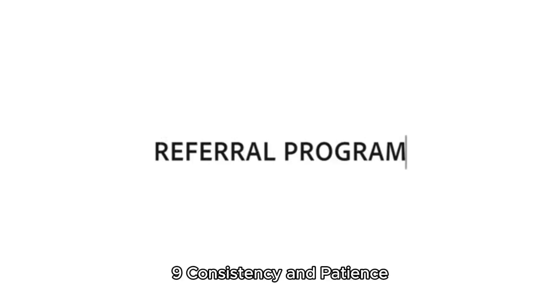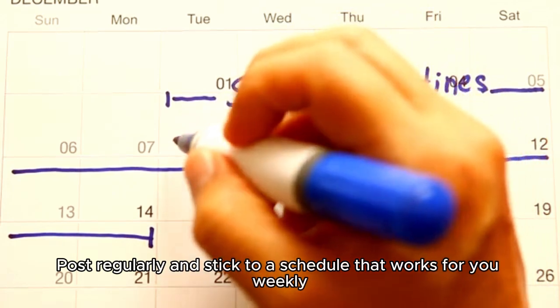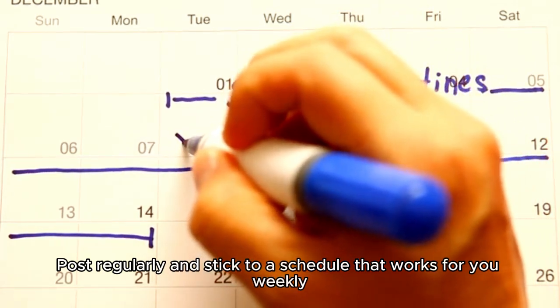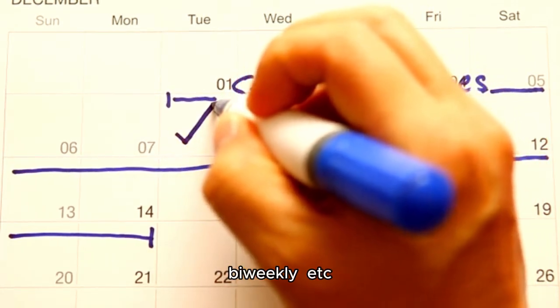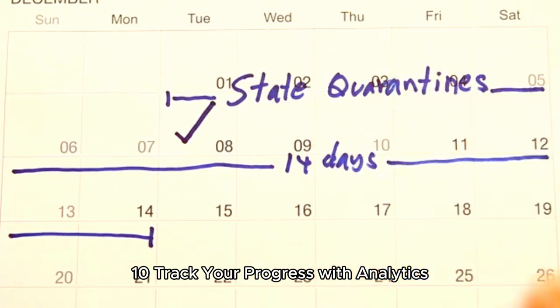Step 9: Consistency and patience. Consistency is crucial — post regularly and stick to a schedule that works for you: weekly, bi-weekly, etc. Step 10: Track your progress with analytics.